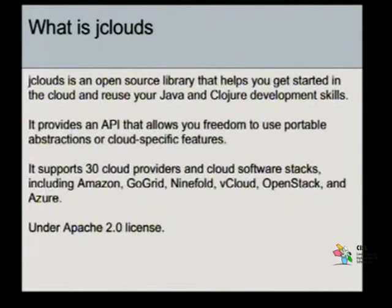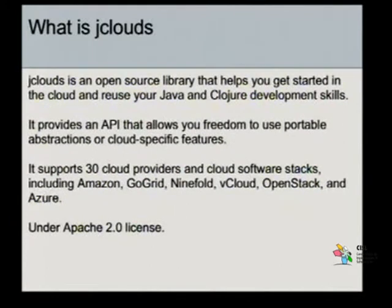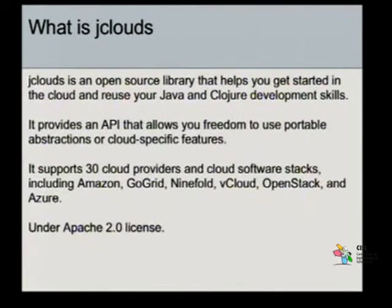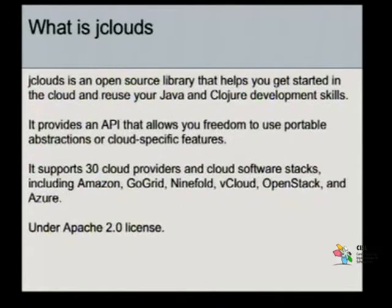Como o Amazon, o GoGrid, o Ninefold, o vCloud, OpenStack e o Azure, por exemplo. A lista é bem extensa, a gente vai ver mais na frente exemplos de pilhas de software e provedores que têm suporte do jClouds. A licença desse software é a licença Apache 2.0.